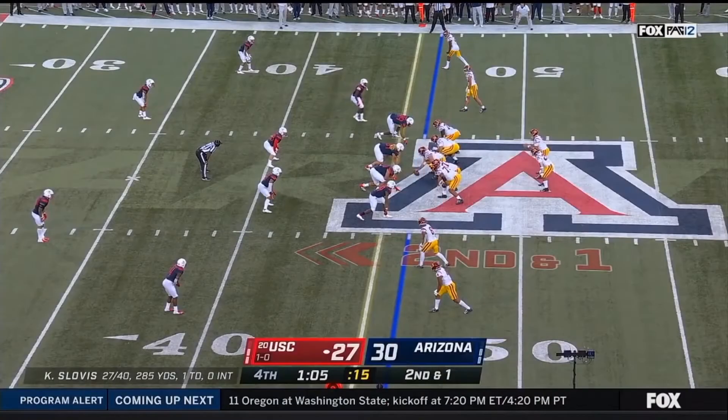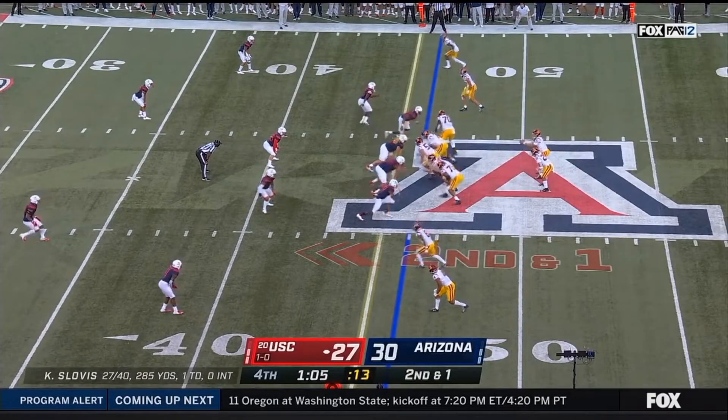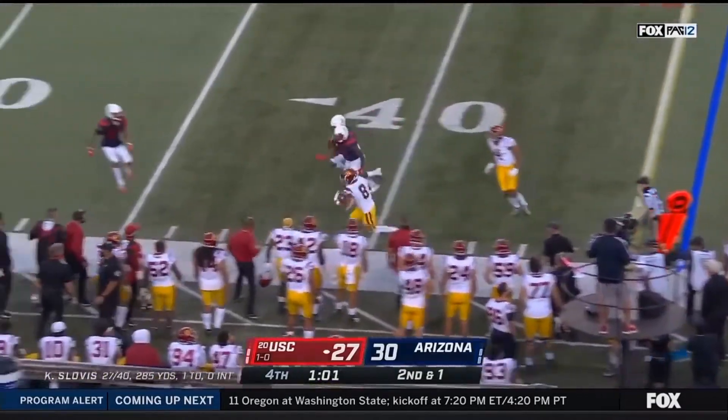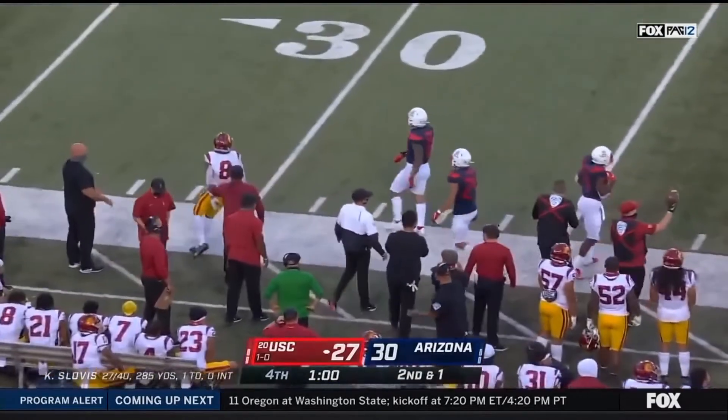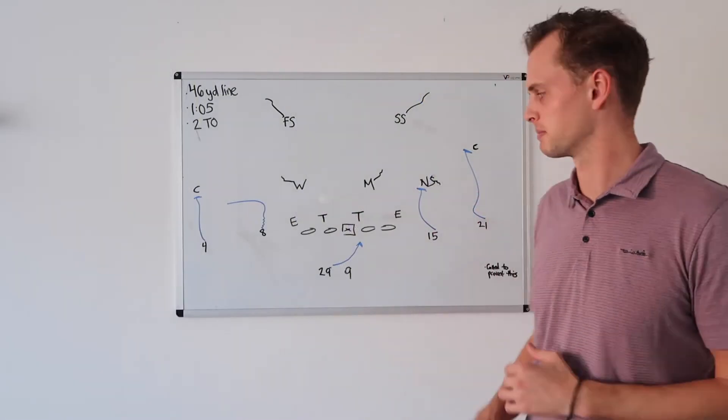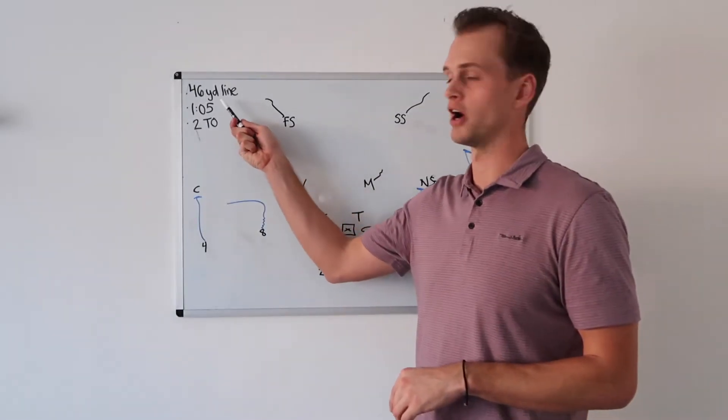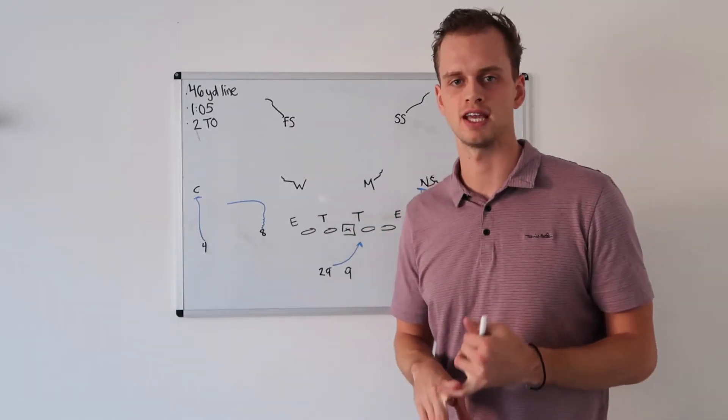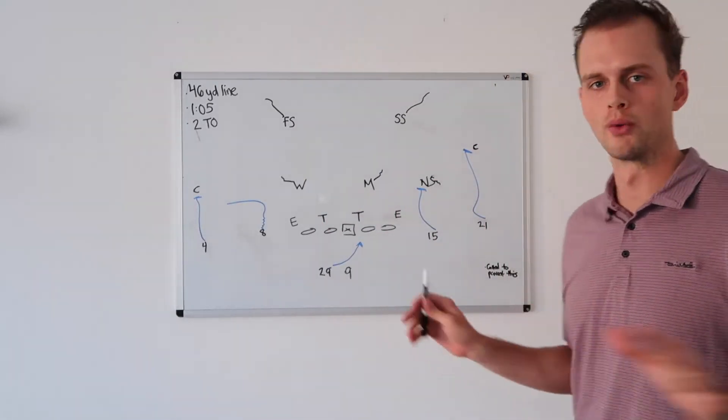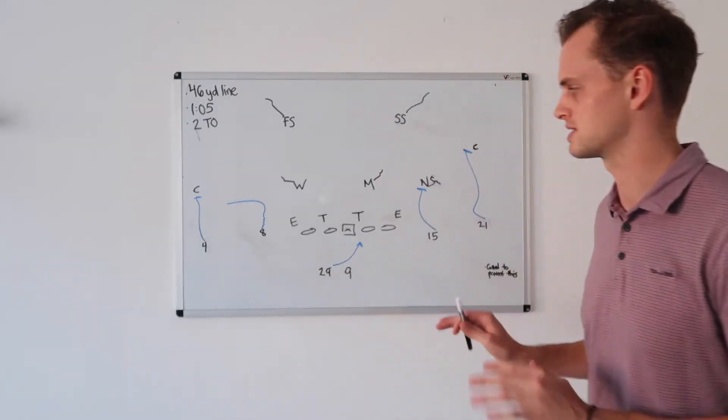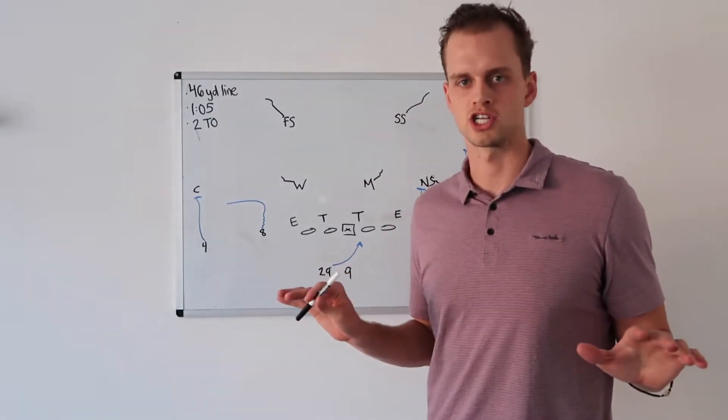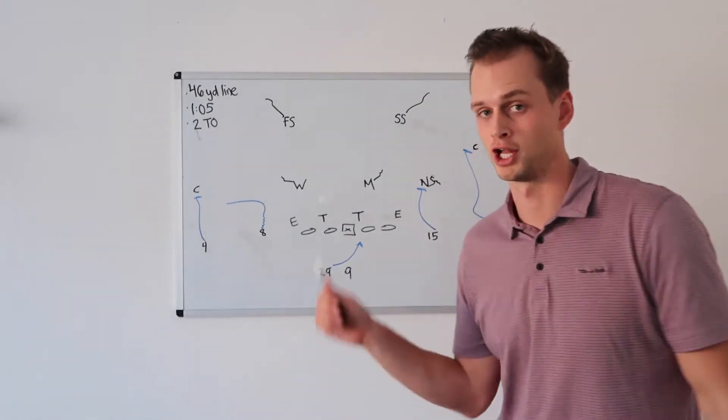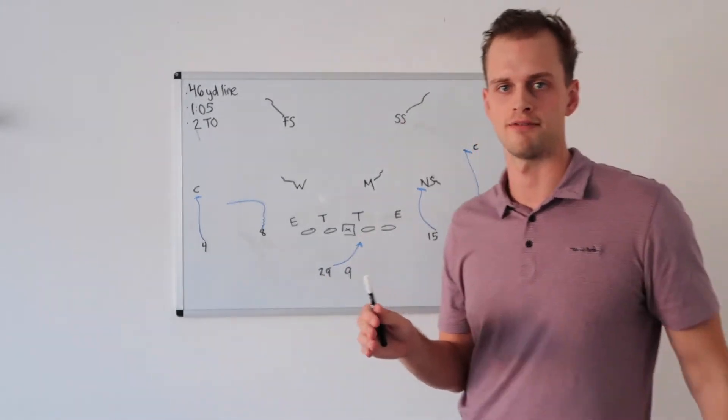Let's check out the second play. Near side, Amon Ra St. Brown out of bounds at the 40. After that big chunk play, now the scenario is you're on the opponent's 46, one oh five left in the game, you have two timeouts. No reason to rush. You can't just waste time, but no reason to rush at all.